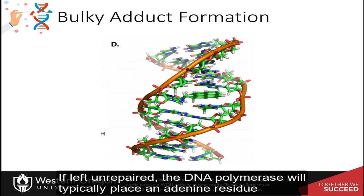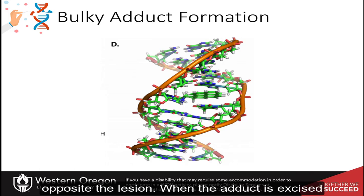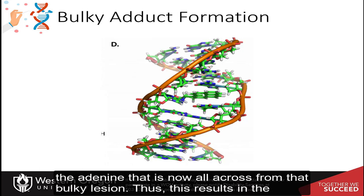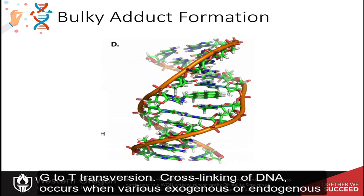If left unrepaired, the DNA polymerase will typically place an adenine residue opposite the lesion. When the adduct is excised after replication, the original guanine base will then be replaced by a thymine residue that matches the adenine now across from that bulky lesion. Thus, this results in a G-to-T transversion.